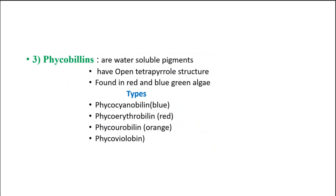The third pigment is phycobillins. These are an exceptional case because they are water-soluble pigments and they have an open tetrapyrrole structure, whereas in chlorophyll the structure is a closed ring. Phycobillins are basically present in red algae and some blue-green algae. They are further classified into four types: phycocyanobilin, which is blue in color; phycoerythrobilin, which is red in color; and phycourobilin, which is orange in color.